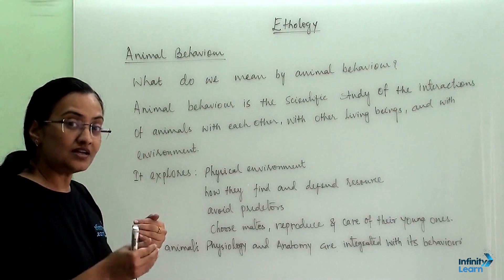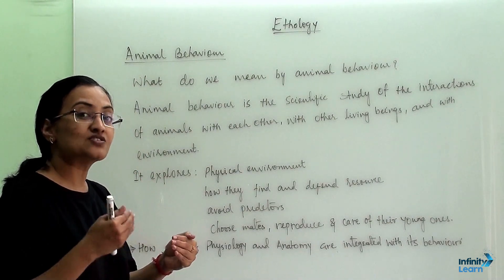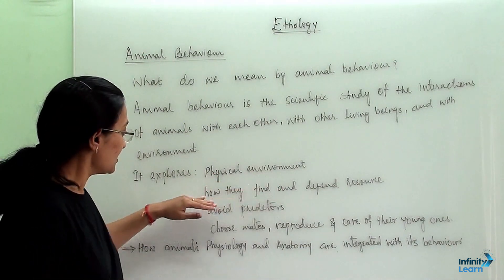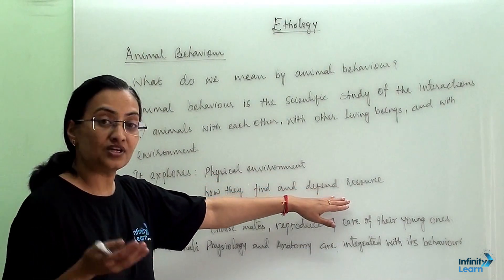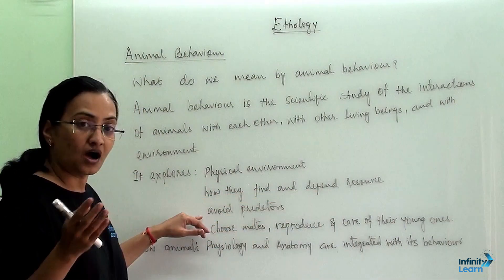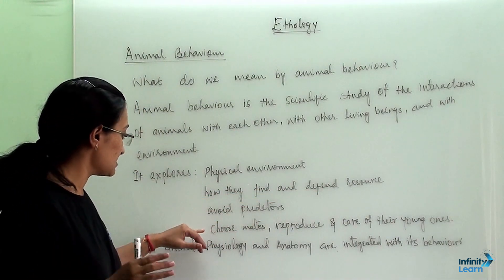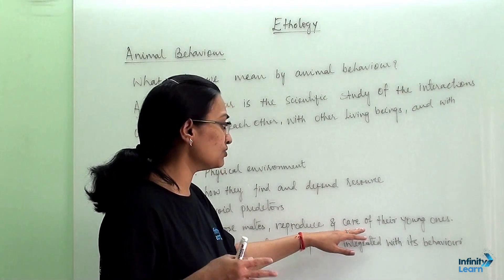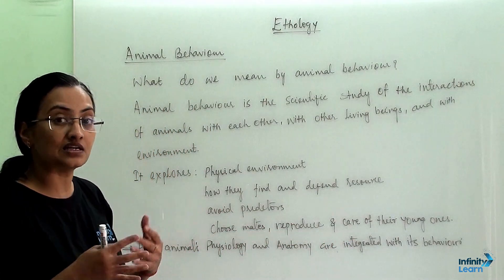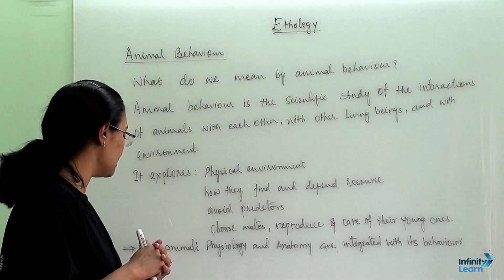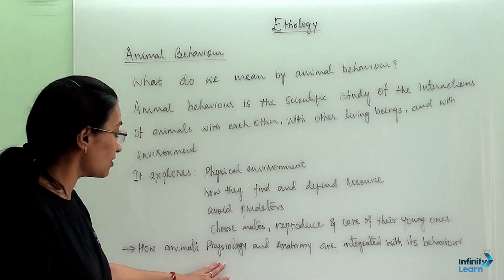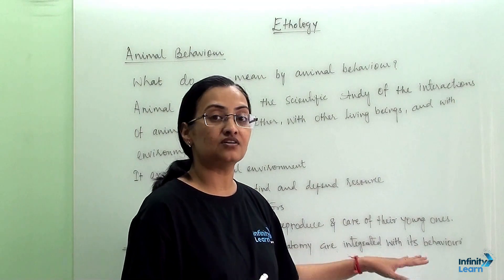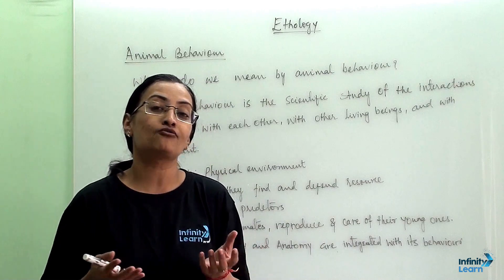Under animal behavior, we are going to explore the physical environment of animals, how they find and defend their resources, how they avoid their predators, how they choose mates, how they reproduce and how they take care of young ones. How animal psychology and anatomy are integrated with behavior — all this comprises animal behavior.